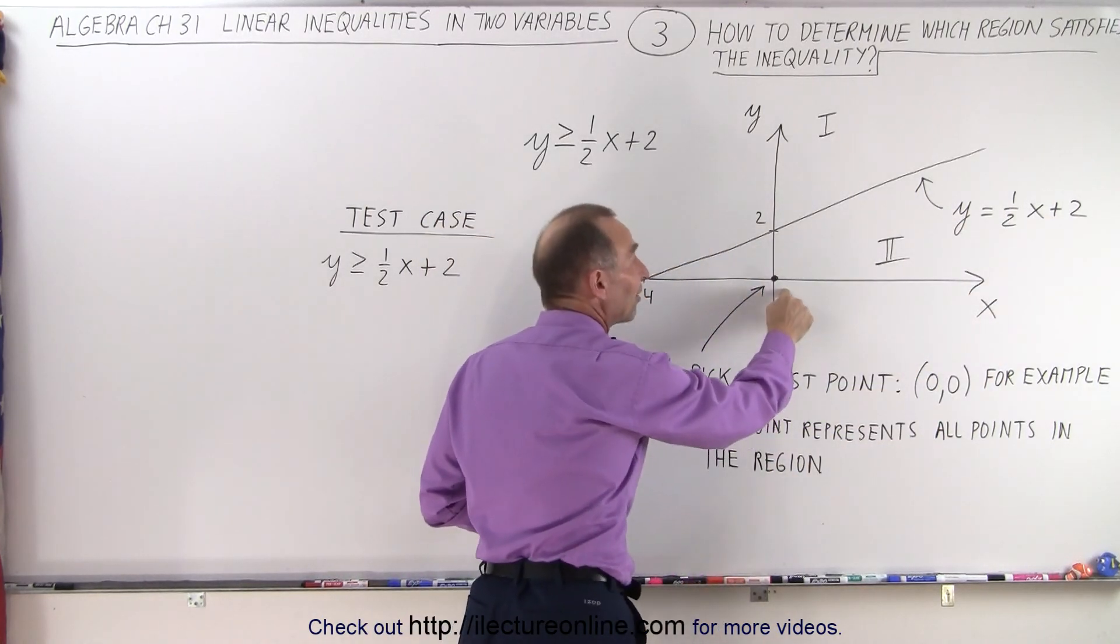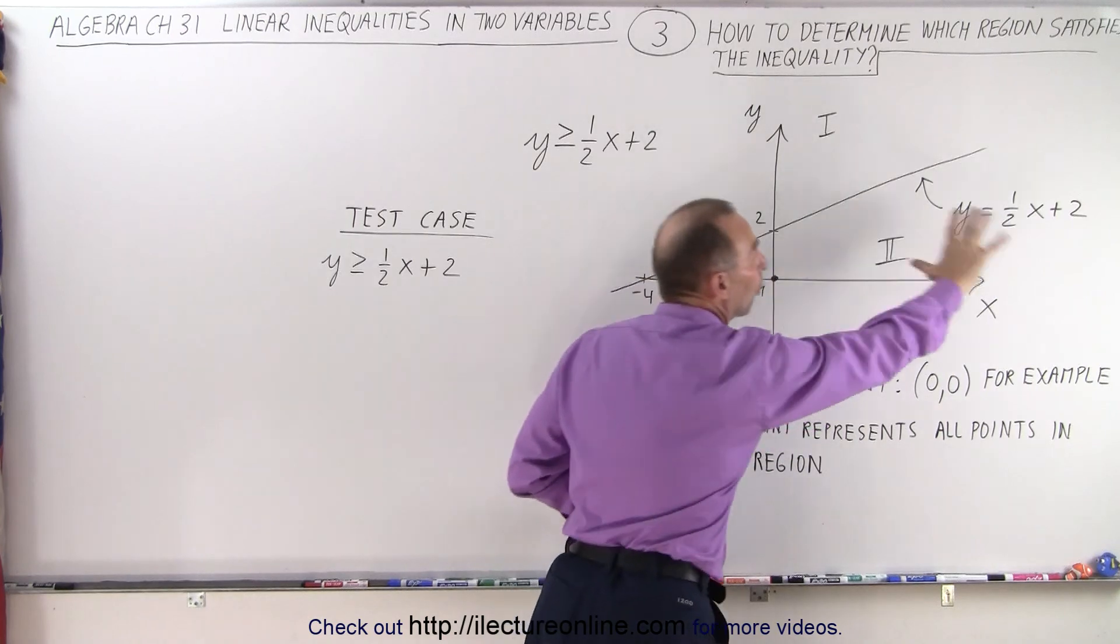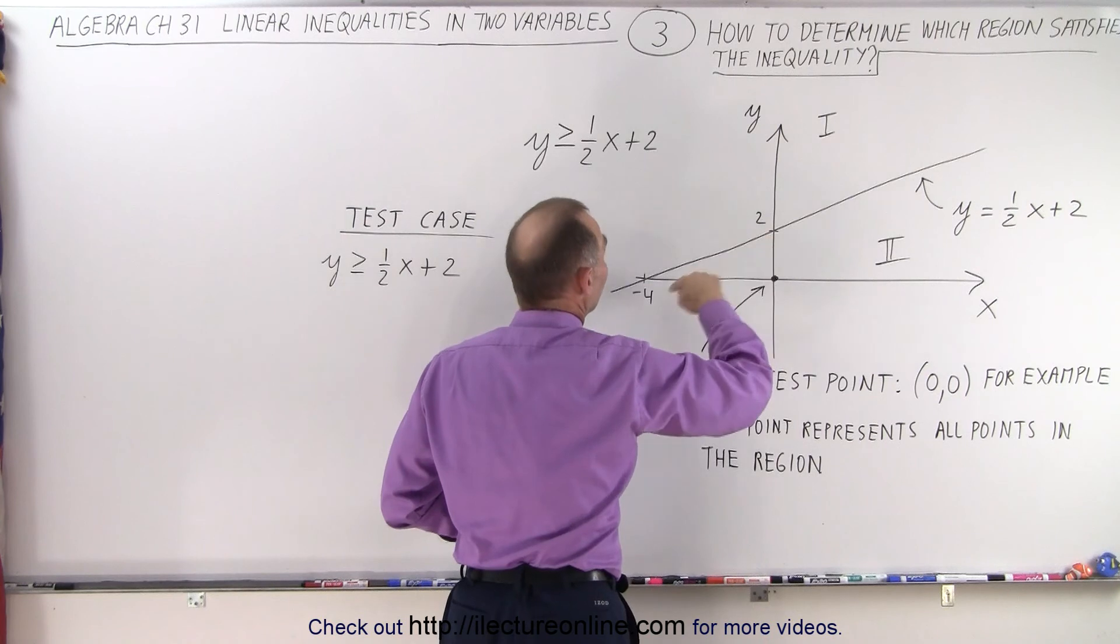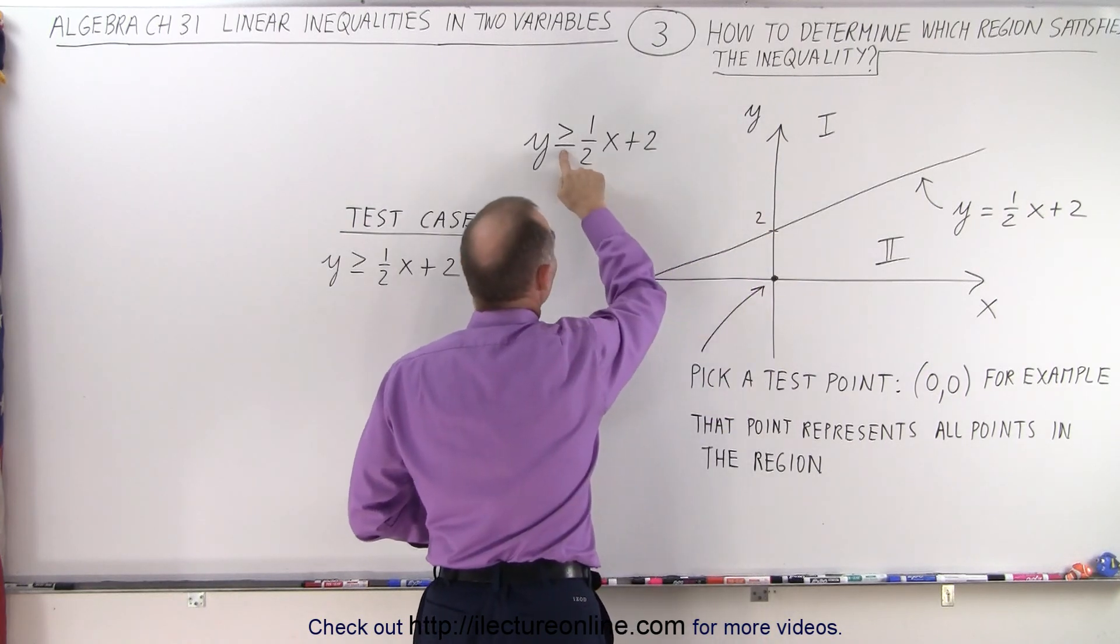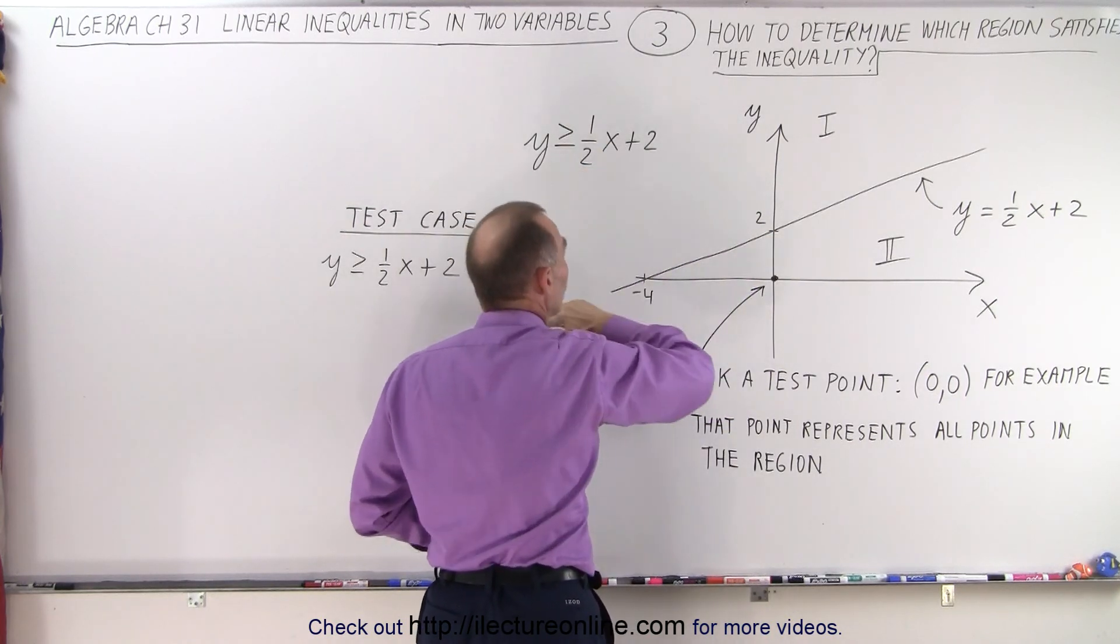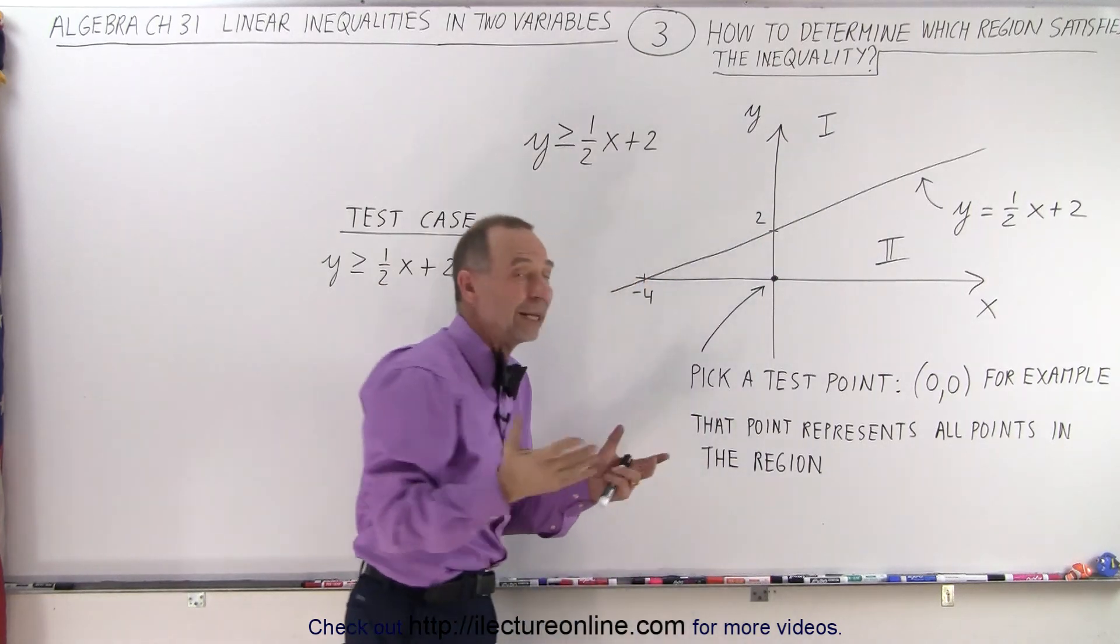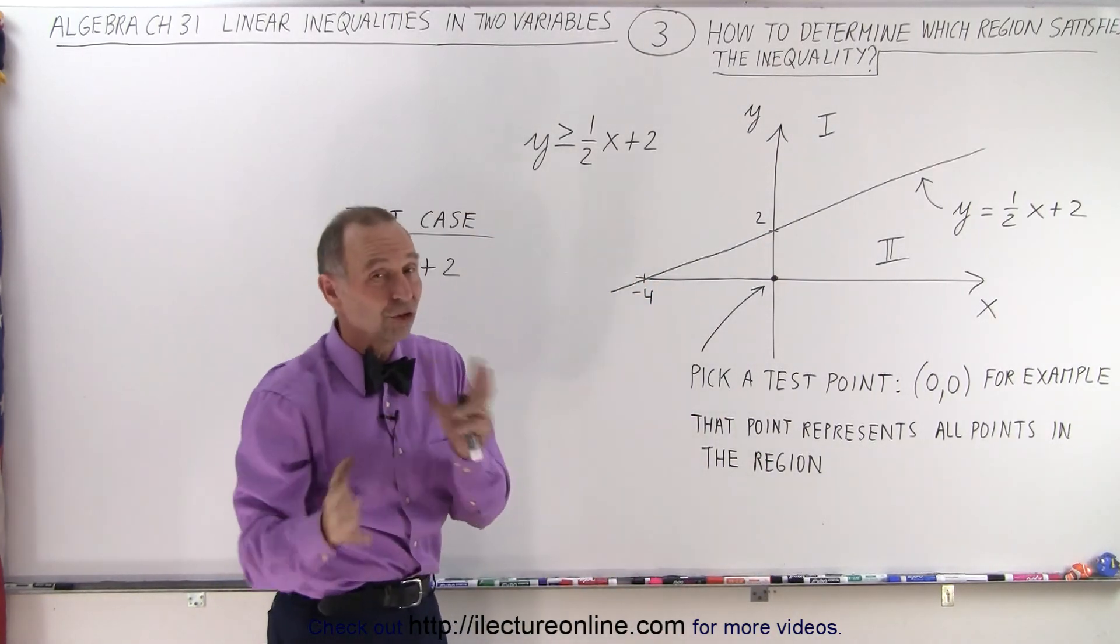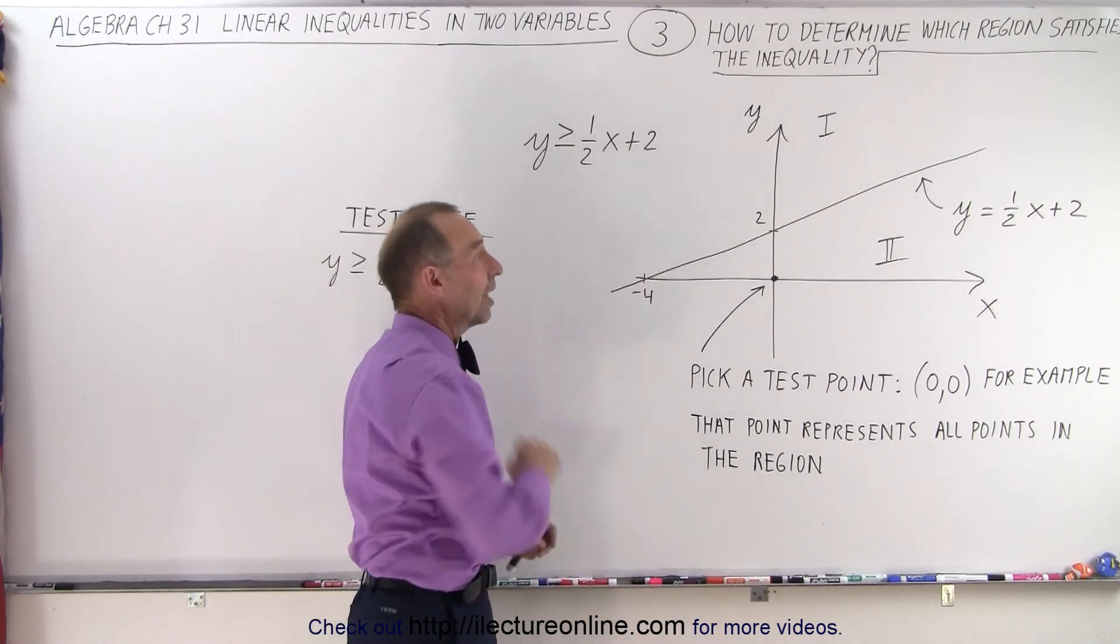If that point satisfies the inequality, then all the points in the region satisfy the inequality. The points on the line will satisfy the inequality if we have the equal sign like we do in this case, so we draw a solid line. We already know all the points on the line satisfy the inequality, we just don't know about the points on either side.